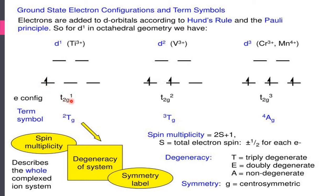For the d2 system, with an example of vanadium 3+, the two electrons are both in the t2g set. For the d3 system, with examples of chromium 3+ and manganese 4+, all three electrons are in the t2g set.